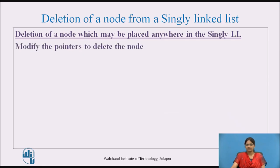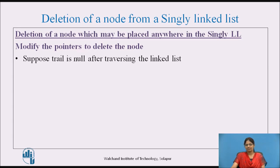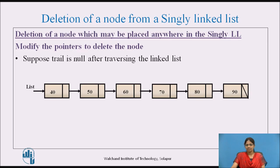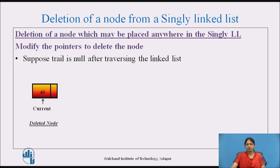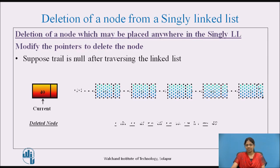There are special situations after traversing the list. In the first case, suppose trail is null after traversal. Consider a linked list where we want to delete a node with value 40. Trail is initially null and current points to the first node. The comparison is equal, meaning we want to delete the first node. We simply set list equal to list's next. After deletion, the first node is removed and this is the updated list.